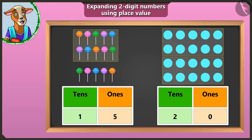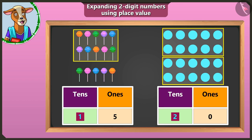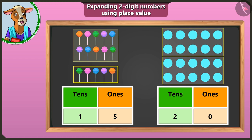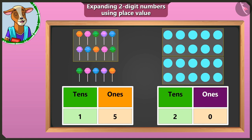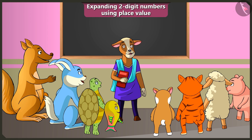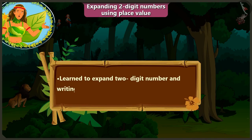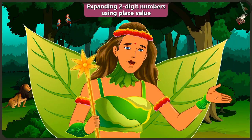Well done, Billy! So children, remember: as many groups of tens are made, you write that number in the tens box. The remaining number will be written in the box for ones. If no number is left, then write zero in the ones box. In this video you have learned to expand two-digit numbers by using place value, writing in the box of tens and ones. In the next video we will understand expanding two-digit numbers using place value through examples in a better way.